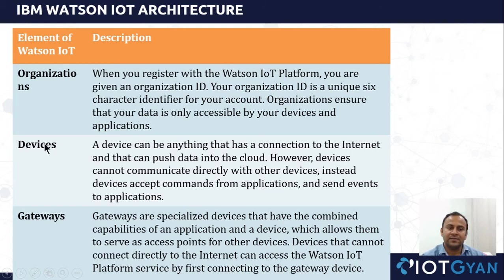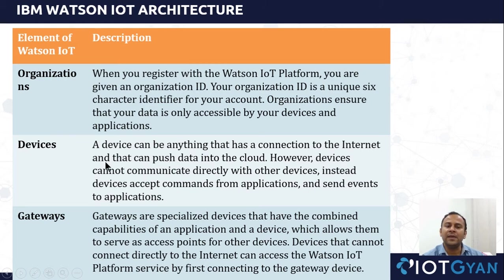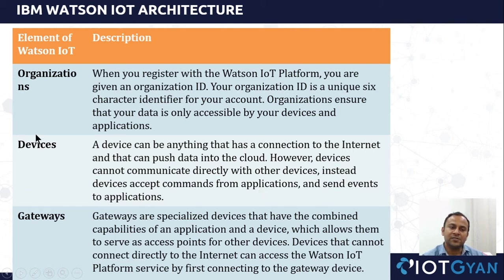Next is devices. A device can be anything that has a connection to the internet and is capable of pushing data into the cloud. One important point: there is no facility in the cloud for one device to directly talk to another device, and it is not needed because device-to-device communication can be handled at the gateway level. A device accepts commands from the application and sends events to the application.